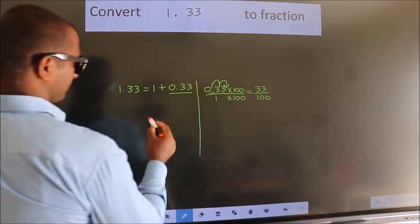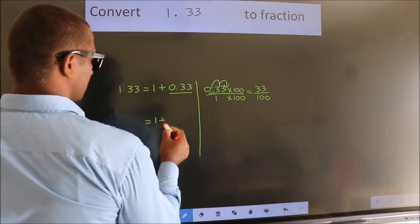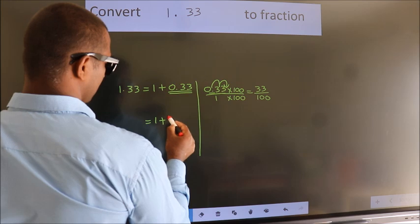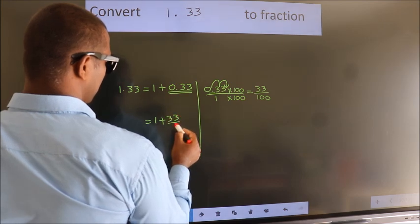Now here, 1 plus, in place of 0.33, I write this: 33 by 100.